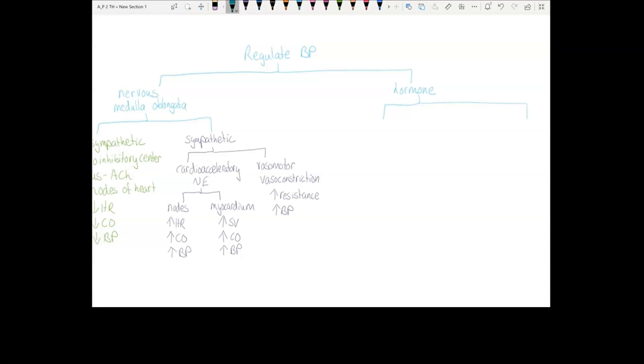We have the renin-angiotensin system. This is three hormones: Angiotensin 2, ADH, and aldosterone.